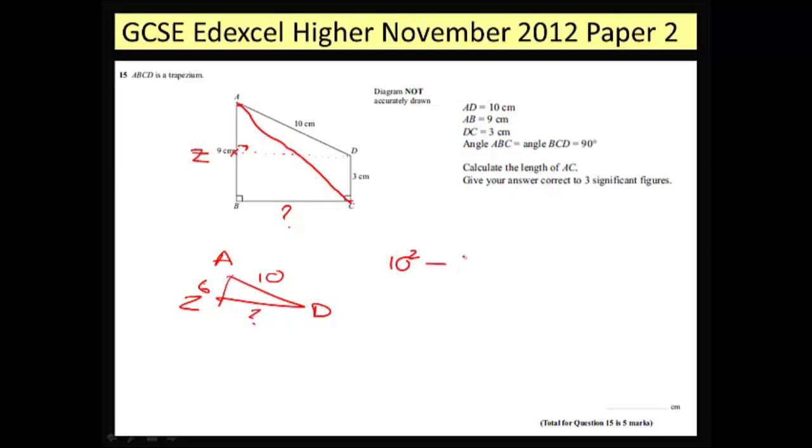So to do this I'm going to do the hypotenuse squared minus one of the short side squared and that will give me my unknown length squared. So that's 100 minus 36 which is a fantastic number 64. Don't forget to square root it. That means that this length is 8cm.